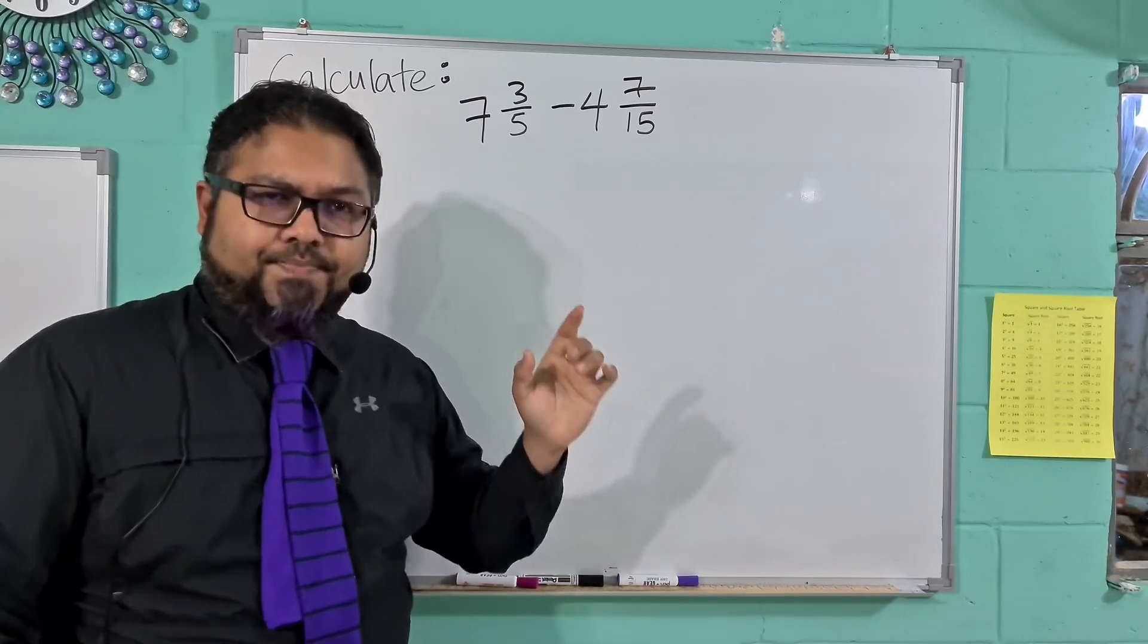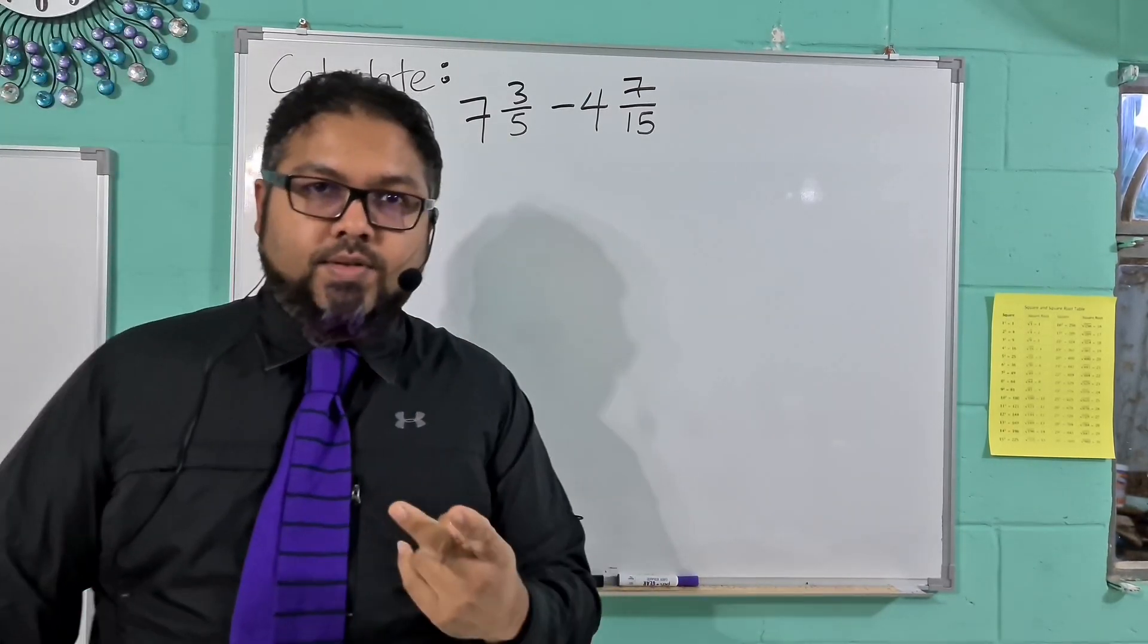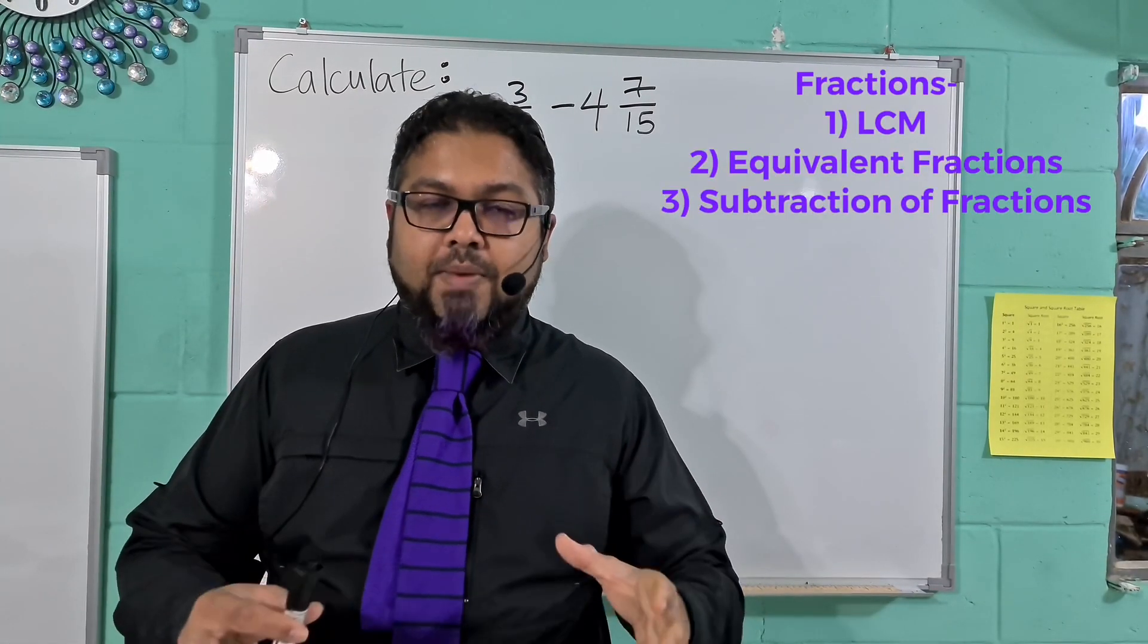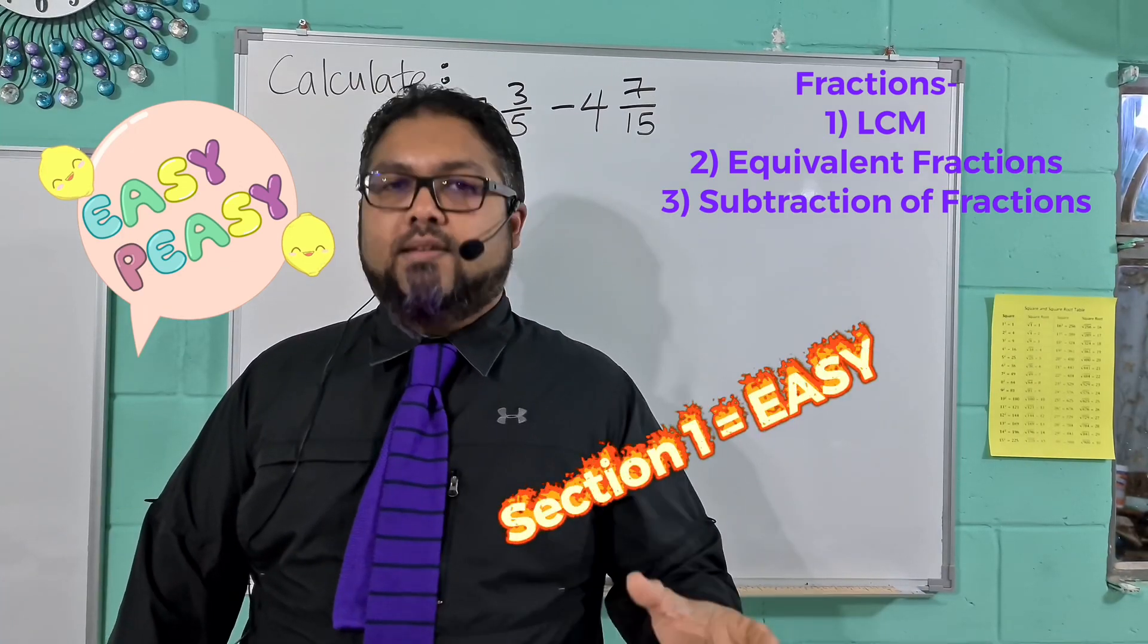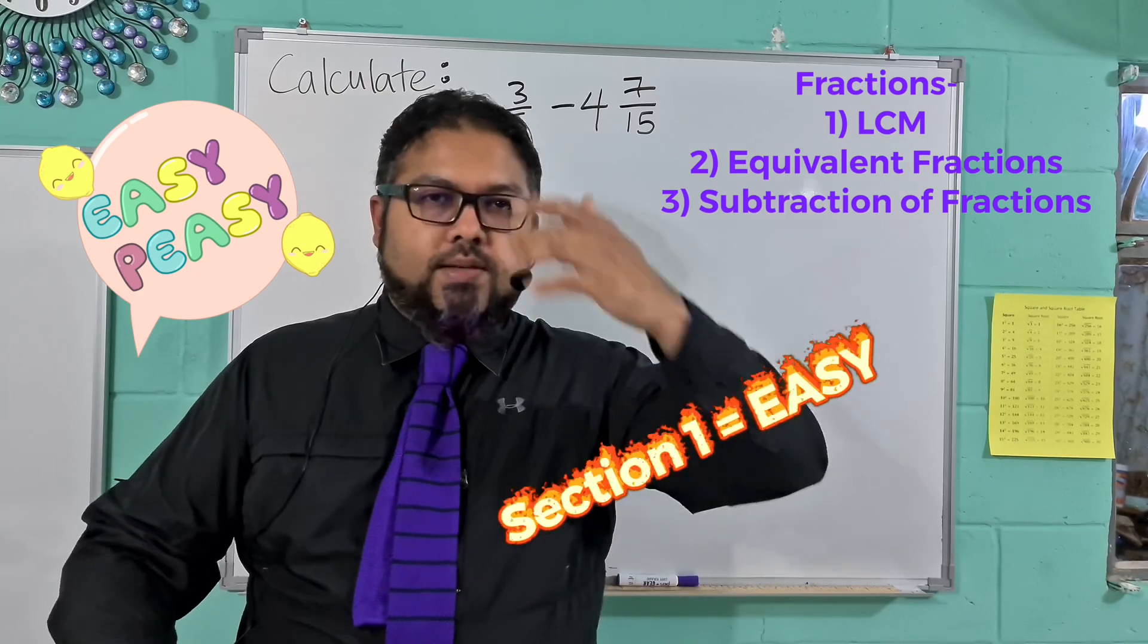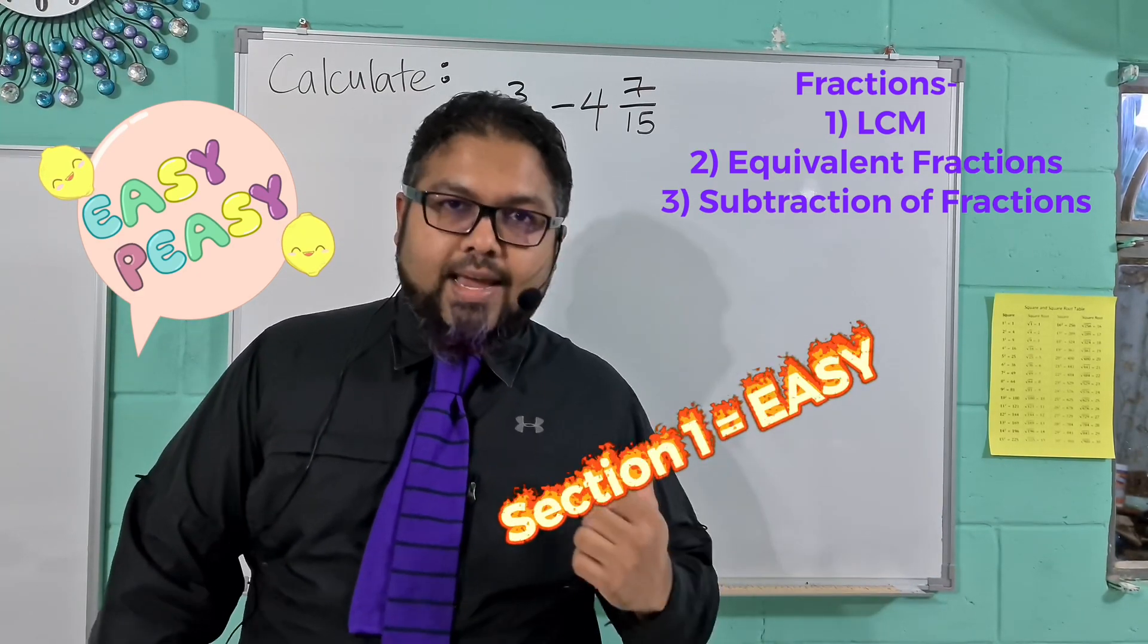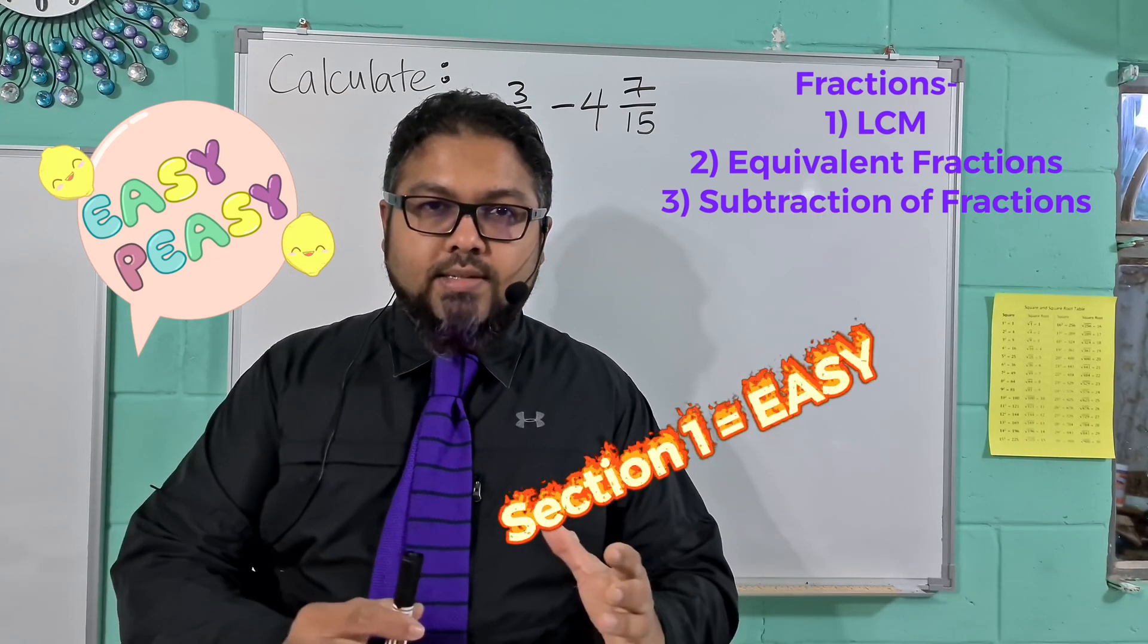So what we have here is actually a question. This was from section 2. And remember I told you guys, in the mathematics part of the SEA paper, section 1 is easy. Whatever they ask for is usually the case. So if they ask 2 plus 2, 4. No tricks at all. What we will see here is this question is a little bit different, and it uses a lot of concepts from the topic of fractions.